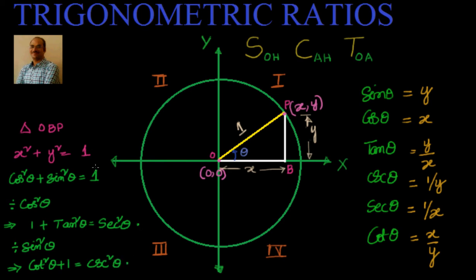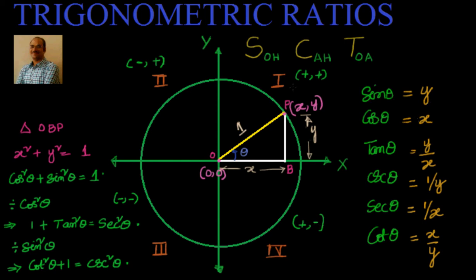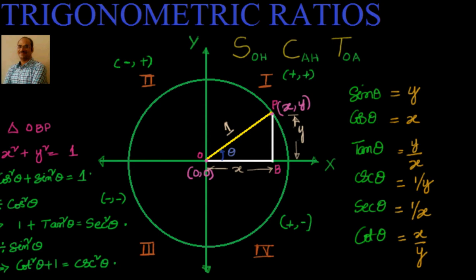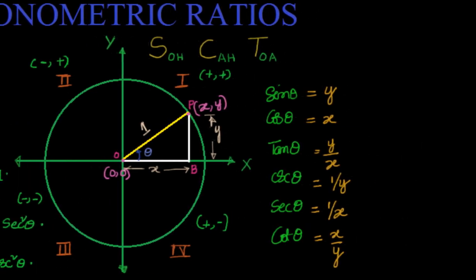These are the three trigonometric identities we have obtained. Also, to understand how these trigonometric ratios behave in different quadrants, we can see that in the first quadrant, both x and y are positive. In the second quadrant, x is negative but y is positive. In the third quadrant, both x and y are negative. In the fourth quadrant, x is positive and y is negative. Since x equals cos and y equals sin, cos and sin also act in the same way.